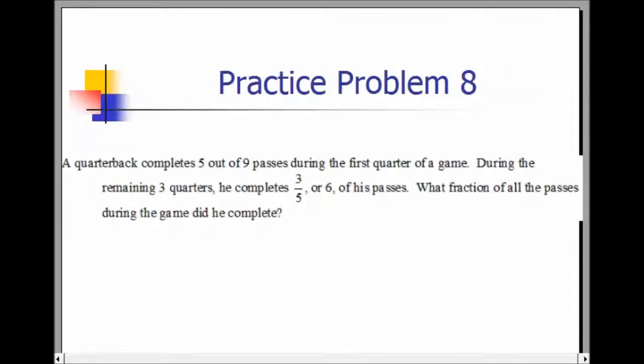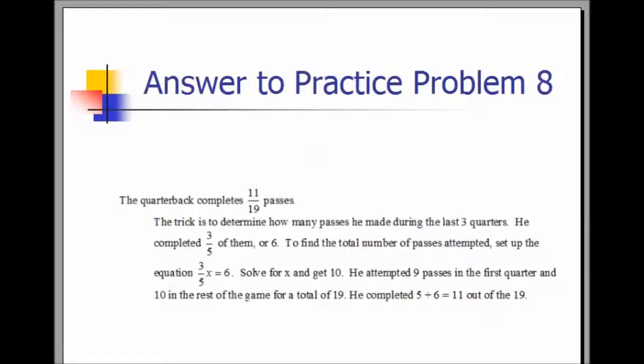Practice Problem 8. A quarterback completes five out of nine passes during the first quarter of a game. During the remaining three quarters, he completes three-fifths of his passes, which is six. What fraction of all the passes during the game did he complete? The quarterback completes 11 out of 19 of his passes. The trick is to determine how many passes he made during the last three quarters. He completed three-fifths of them, or six. To find the total number of passes attempted, set up the equation three-fifths x equals six. Solving for x gives 10. He attempted nine passes in the first quarter and 10 in the rest of the game, for a total of 19, completing eleven out of 19.